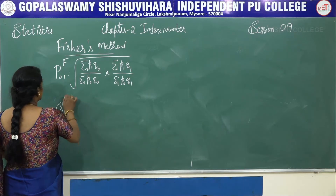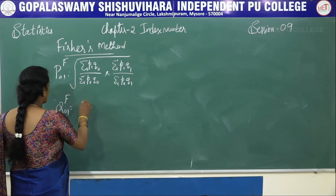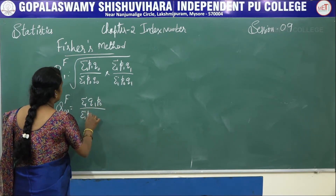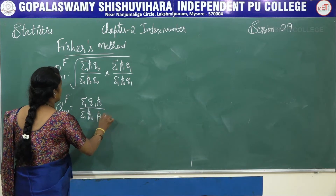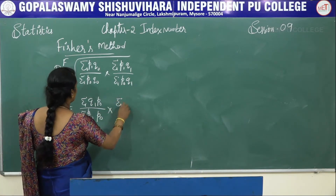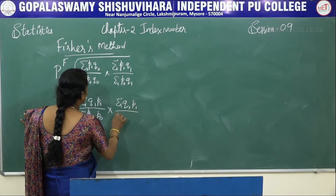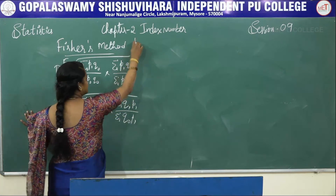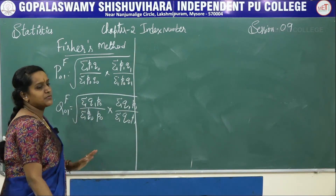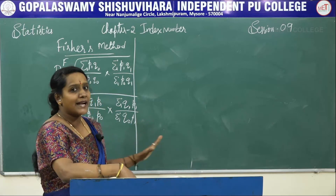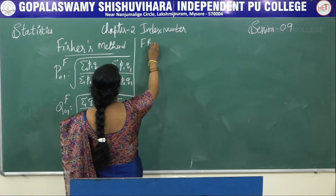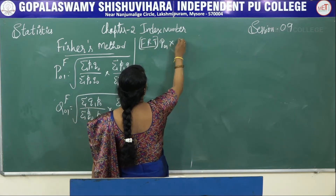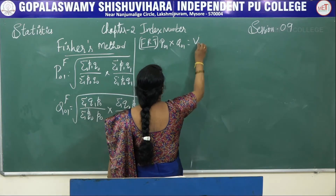Similarly, Fisher's quantity index number is: Q01(F) = square root of [(summation Q1×P0 / summation Q0×P0) × (summation Q1×P1 / summation Q0×P1)]. The FRT condition is: P01 × Q01 should equal V01.